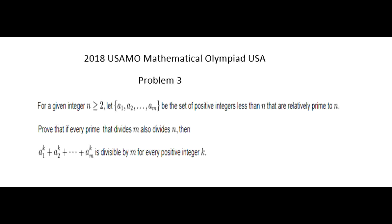2018 Mathematical Olympiad of the USA, problem number 3. For a given integer n greater than or equal to 2, let a1, a2, etc., am be the set of positive integers less than n that are relatively prime to n. Prove that if every prime that divides m also divides n, then the sum of all these numbers raised into power k is divisible by m for every possible integer k.